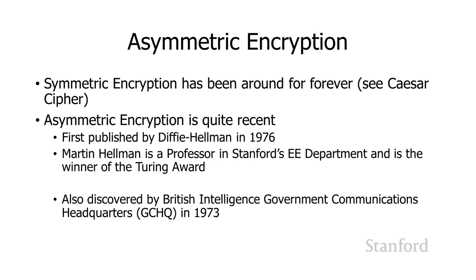Symmetric encryption has been around pretty much forever, as we've seen from the Caesar cipher example. Asymmetric encryption, on the other hand, is quite recent — it was first published by Diffie-Hellman in 1976. The Hellman in Diffie-Hellman is actually Martin Hellman, who is a professor in Stanford's EE department and is the winner of the Turing Award, which is the equivalent of a Nobel Prize in computer science.